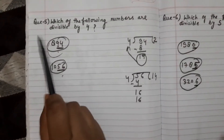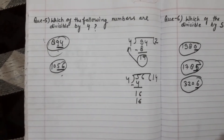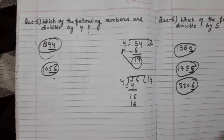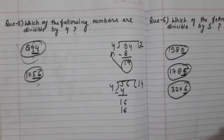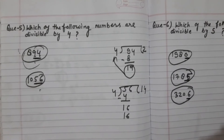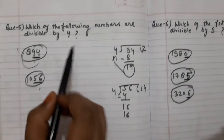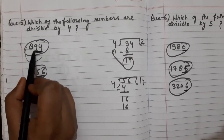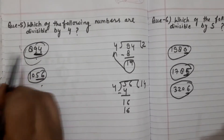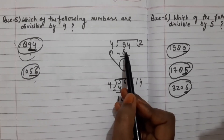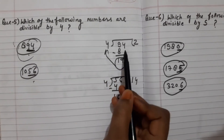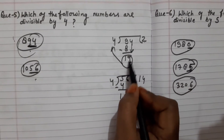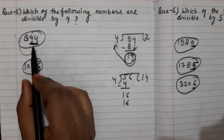Next question: which of the following numbers are divisible by 4? A number is divisible by 4 if the number formed by its last two digits on the extreme right is divisible by 4. For example, checking the last two digits — 14 is not divisible by 4, so this number is not divisible by 4.